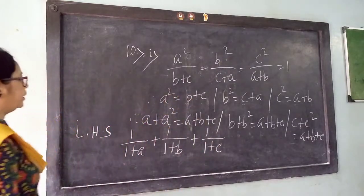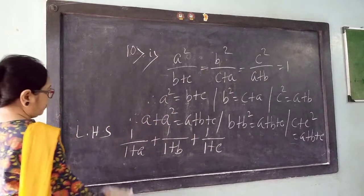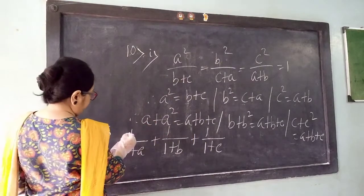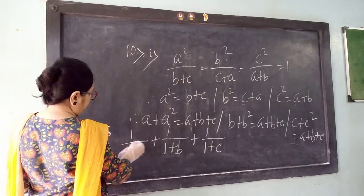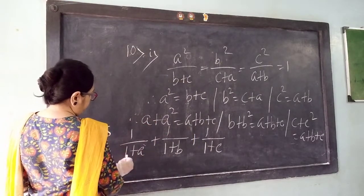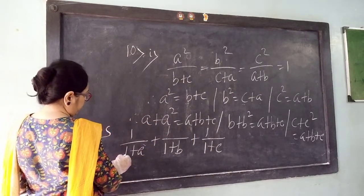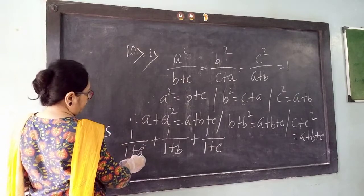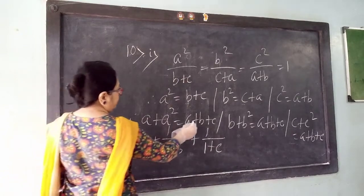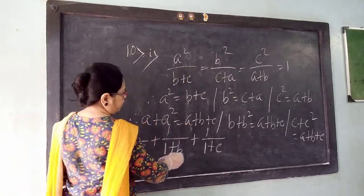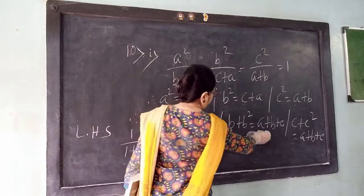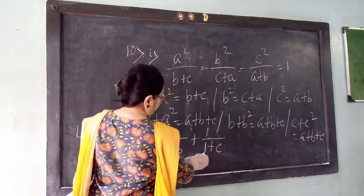Now see here, if I multiply both numerator and denominator by A, I get A plus A squared in the denominator. Then I can write A squared. Here I get B plus B squared — I can put this value.